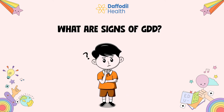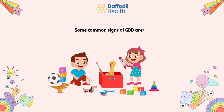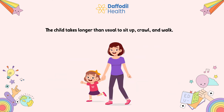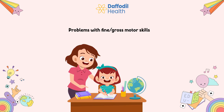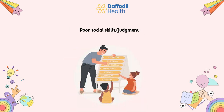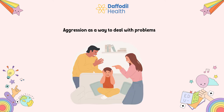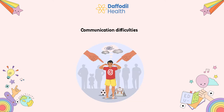What are signs of GDD? Some common signs of GDD are: the child takes longer than usual to sit up, crawl, and walk; having trouble thinking or reasoning; problems with fine and gross motor skills; poor social skills and judgment; aggression as a way to deal with problems; and communication difficulties.